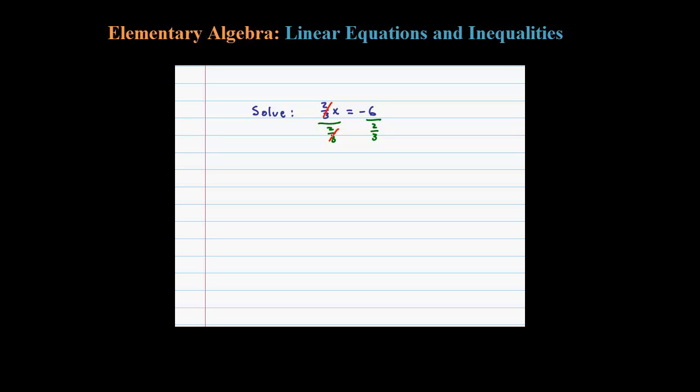When you do that, the entire 2/3rds cancels and that leaves you with 1x. Now when you have a number divided by a fraction, you can treat that as multiplication of the reciprocal, 3 halves.